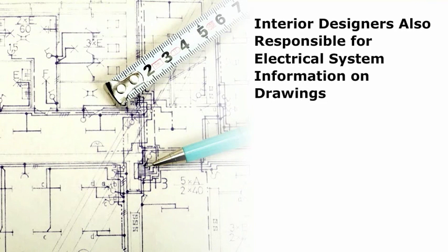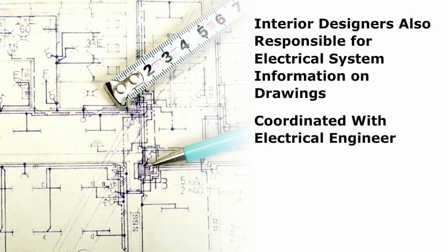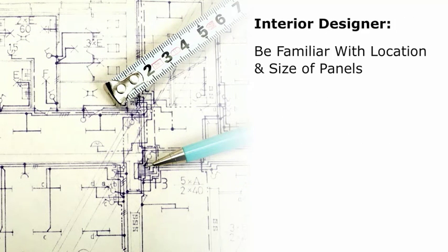Interior designers are also responsible for showing electrical system information on their drawings. The electrical engineer uses the interior design drawings to help design the electrical system. In new buildings, the location and size of equipment rooms, including switching rooms and electrical closets, should be coordinated with the electrical engineer. The interior designer should be familiar with the location and size of the electrical panels and with building systems that affect the type of wiring used.